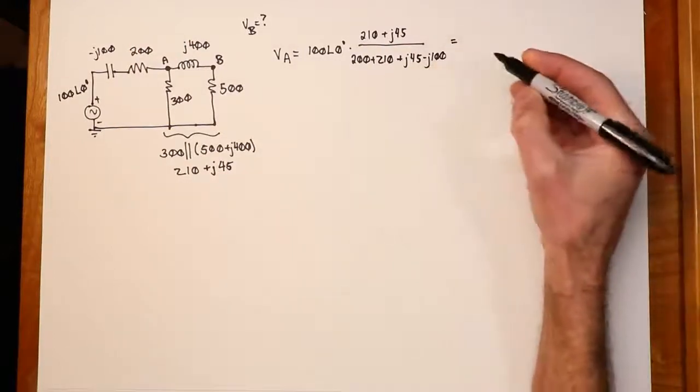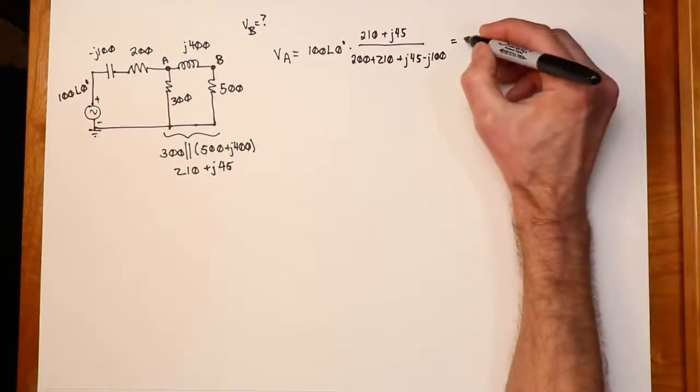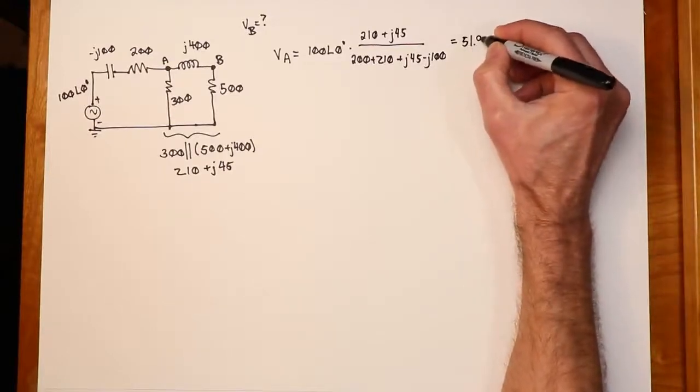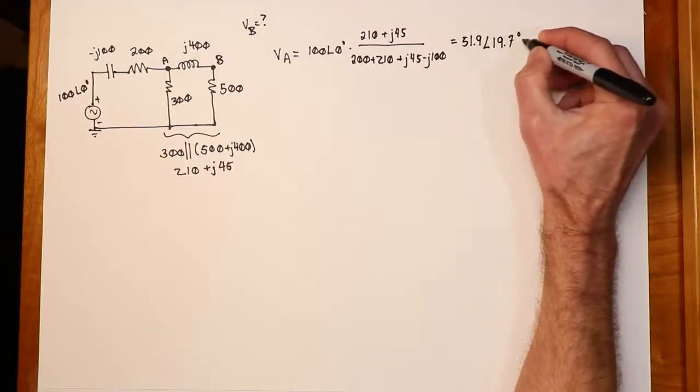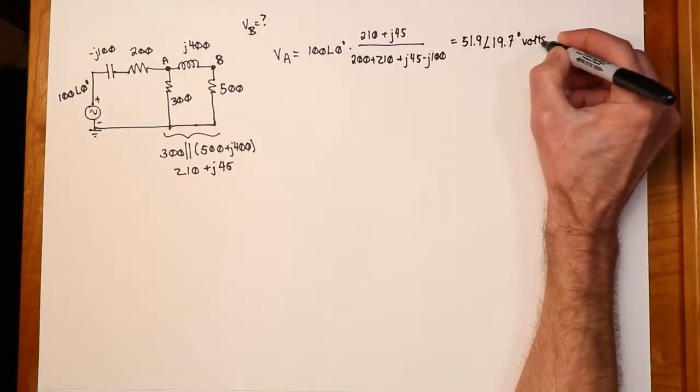Divided by the entire impedance. So I'll just stick the reals together. We have 200 plus 210, and we have the j45 and a -j100 in there. So when we calculate that out, we'll wind up with 51.9 at an angle of 19.7 degrees. That's VA.